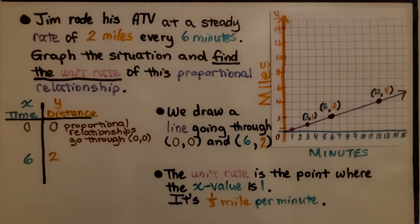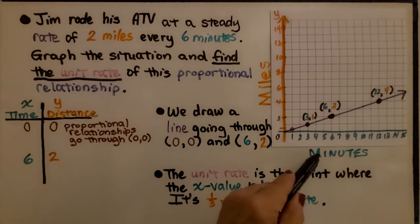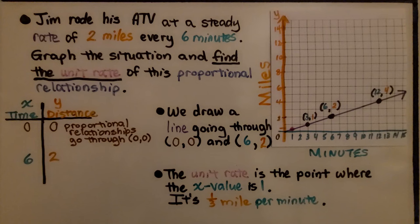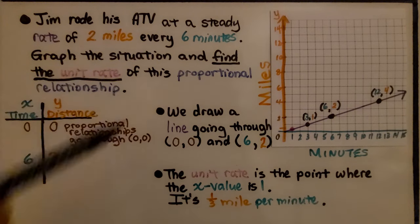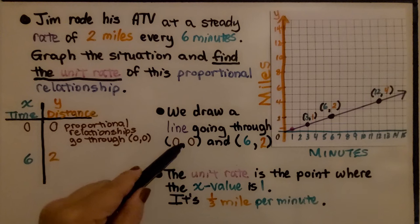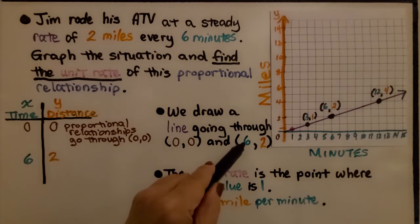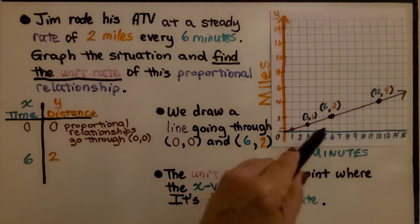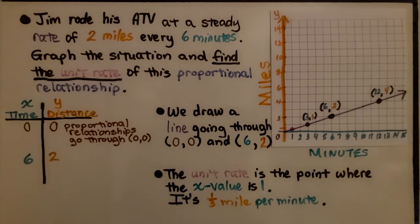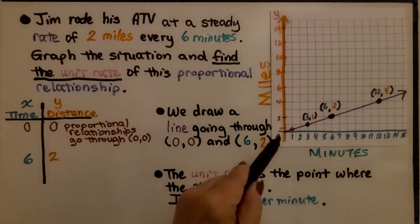Here we have another problem. Jim rode his ATV at a steady rate of two miles every six minutes. Graph the situation and find the unit rate of this proportional relationship. So we have two miles and six minutes — here we have our minutes and here we have our miles. Notice that it says the miles first. We draw a line going through (0, 0), the origin, and to the ordered pair (6, 2). Then we use a straight edge and go from zero zero through that point to make our line. Remember, proportional relationships go through (0, 0).